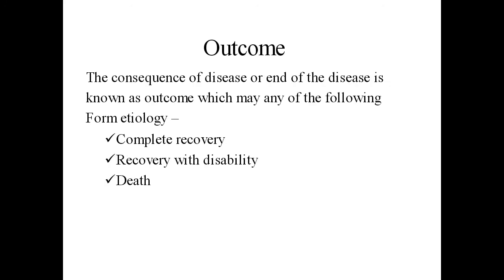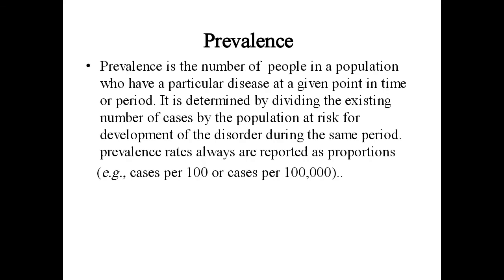The outcome — the consequences or end of the disease — may include complete recovery, recovery with disability, or death. Prevalence is the number of people in a population who have a particular disease at a given point in time. It is determined by dividing the existing number of cases by the population at risk, and prevalence rates are always reported as proportions.